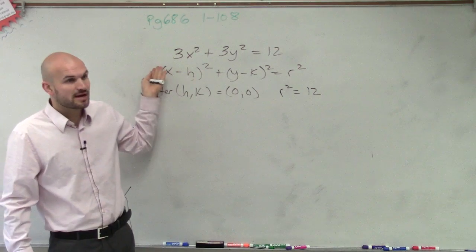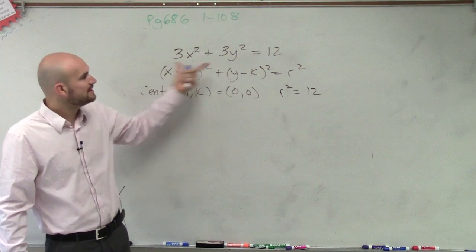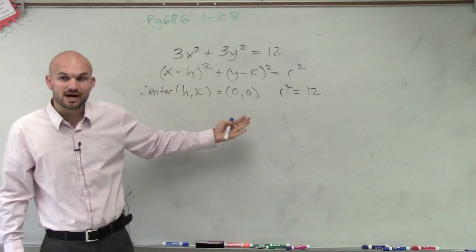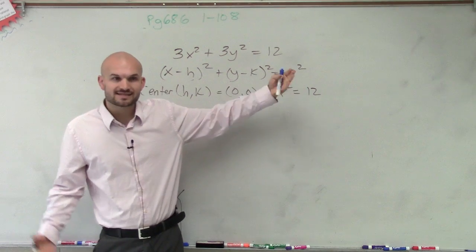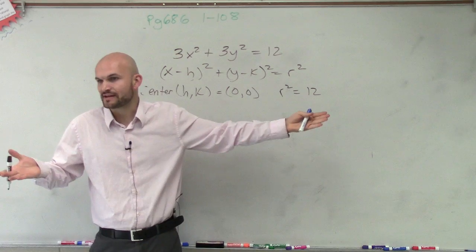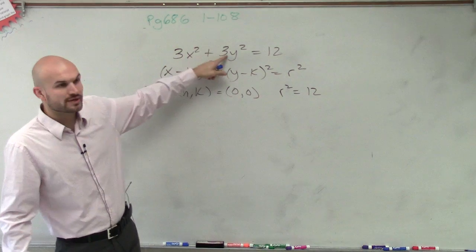Right. In our standard form of the equation, not being multiplied by any number. So if we can get our x and our y's by themselves, then that equals your r squared. That's going to take care of your dilation. So what I need to do is I need to get rid of these 3's.